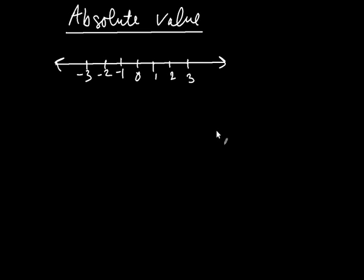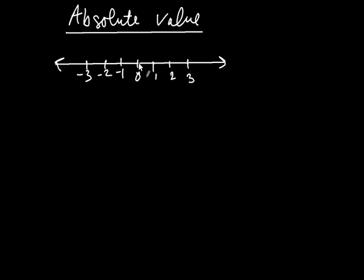Here we're going to talk about what's called the absolute value in mathematics. I've drawn a number line, and let's first discuss the idea of distance on a number line. So if you were right here, we'd say you were at the origin. And if you're here, you're at the number positive 1.